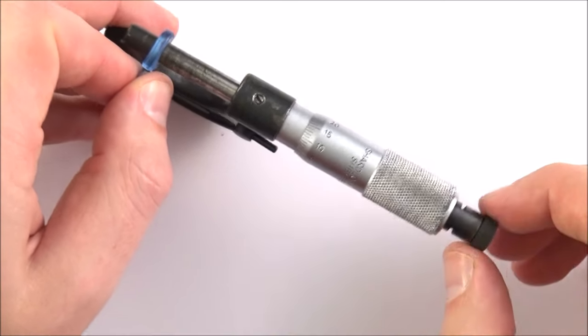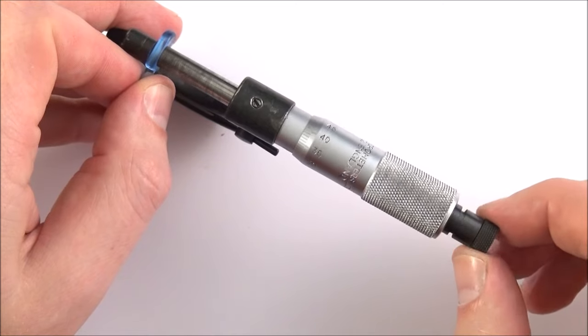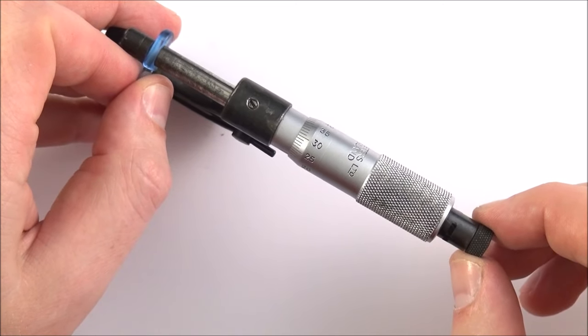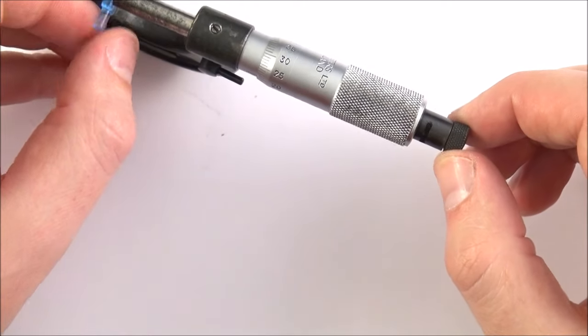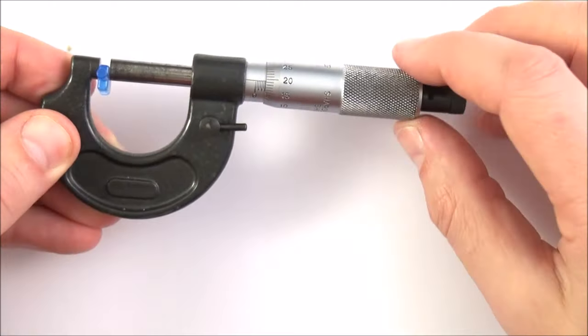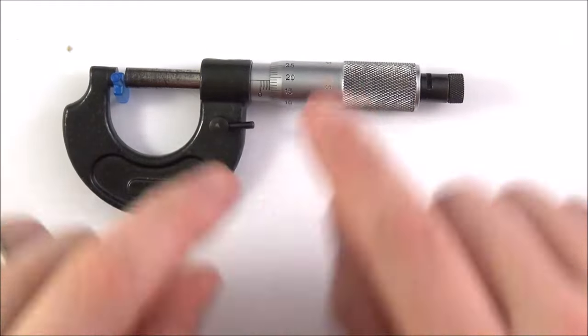The way to actually take your reading is to use the dial at the end, and as you put it in you'll find there's a certain point where you feel a bit of resistance. If you tighten it anymore there's a small click. What we can then do is take the reading off this.